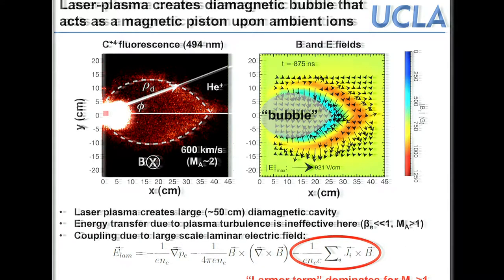The coupling between the laser plasma and the ambient is due to large-scale laminar electric fields rather than turbulence. Looking at the electron momentum equation coupled with Ampere's law, there are several terms that can create an electric field: the pressure gradient, magnetic field gradients or curvature, and most importantly the ion current term of the laser debris across the magnetic field — called the Lorentz term. This dominates for super-Alfvénic explosions.